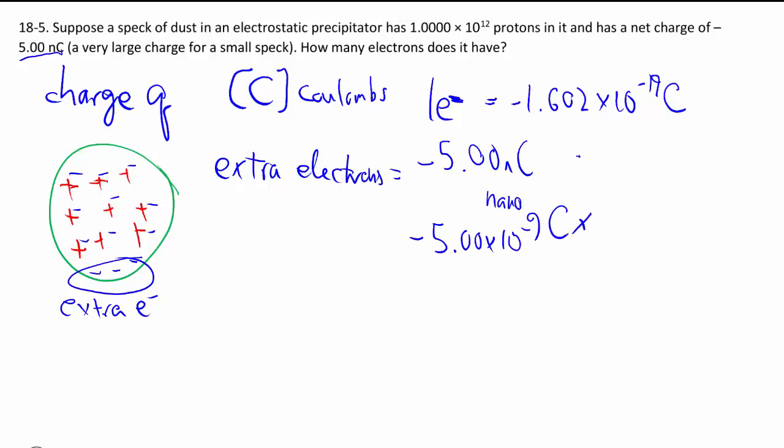And we multiply it by the conversion factor of every electron is 1.602 times 10 to the negative 19 coulombs. Those coulombs cancel out, you're left with number of electrons. And also, we pick the right sign. So we have 3.12 times 10 to the 10 number of electrons.